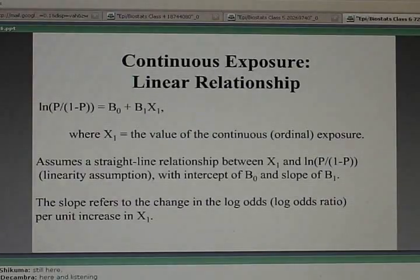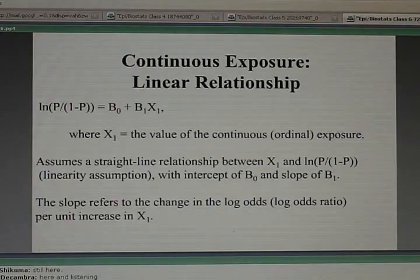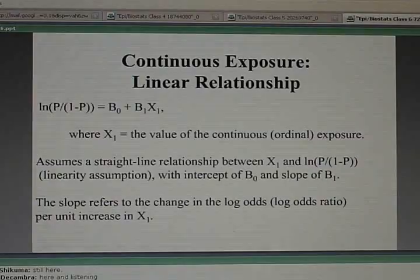This equation says your log odds of disease is β0 plus β1 times cigarette smoking level. It's assuming a linear relationship, a straight line relationship between your outcome, log odds of getting disease, and your intercept. Because this is the formula of a straight line.